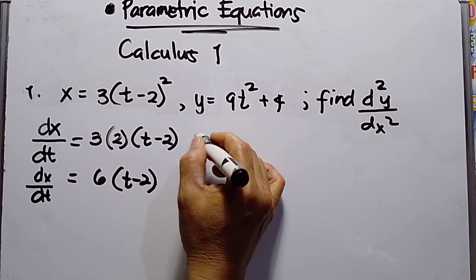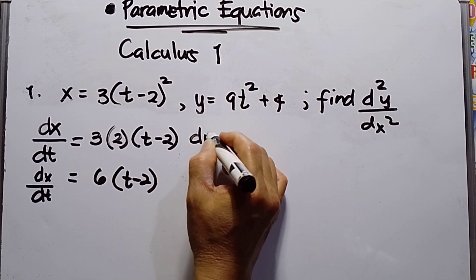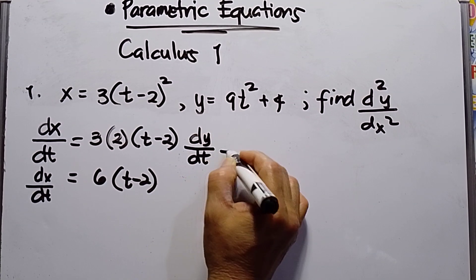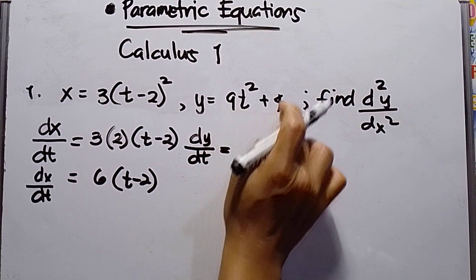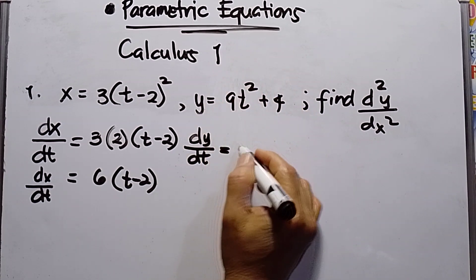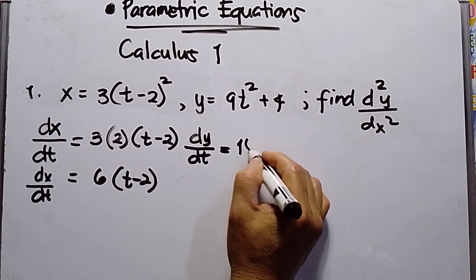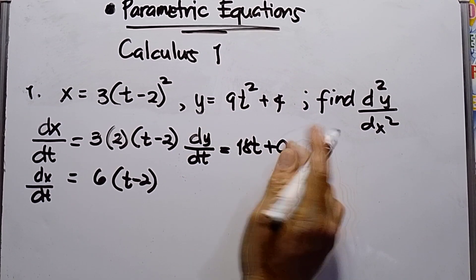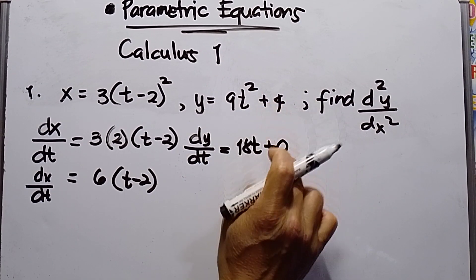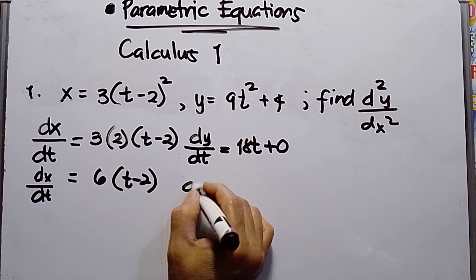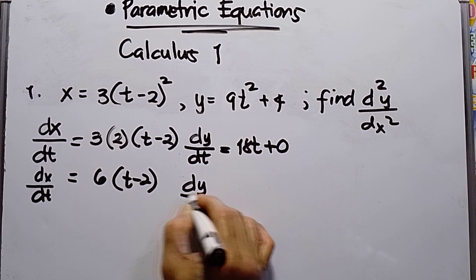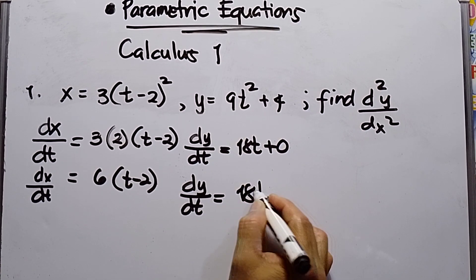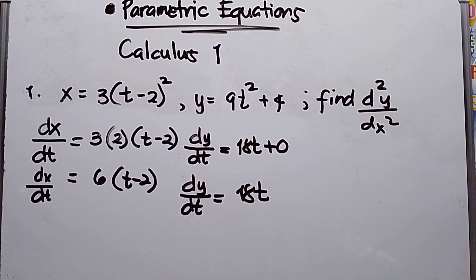The second function gives dy over dt. Differentiating 9t squared plus 4: the derivative is 18t, and the derivative of 4 is 0. So dy over dt equals 18t.